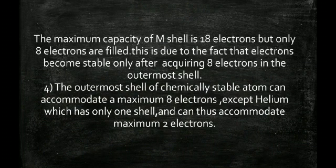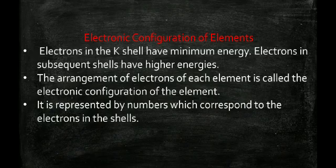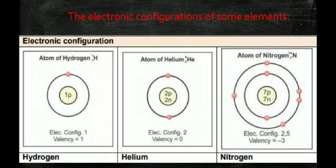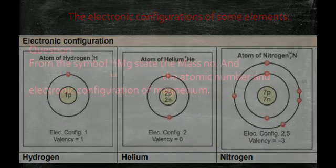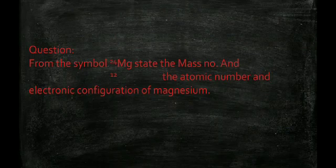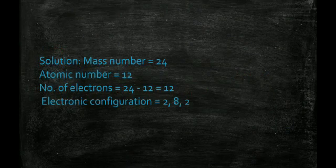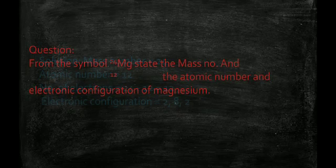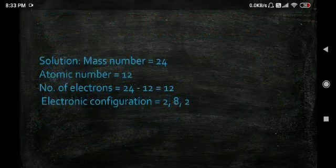Although the M shell can hold 18 electrons, only 8 are filled in the outermost position, because electrons become stable only after acquiring 8 electrons in their outermost shell. This arrangement is called electronic configuration. For example, hydrogen has configuration 1; nitrogen (atomic number 7) has configuration 2, 5. For Mg with mass number 24 and atomic number 12, the electronic configuration is 2, 8, 2.